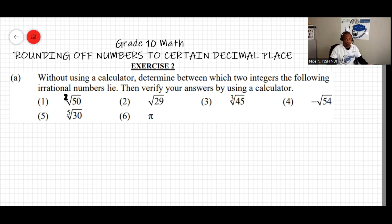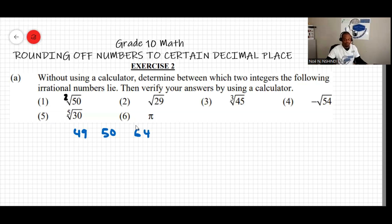The closest square numbers to 50 are: on the left of 50 is 49, and on the right of 50 is 64 — those are the next square numbers. So we write: square root of 49 is less than square root of 50 is less than square root of 64. That gives us: 7 is less than square root of 50 is less than 8.